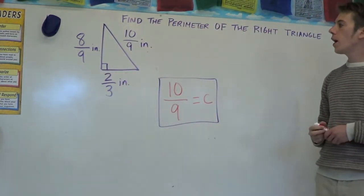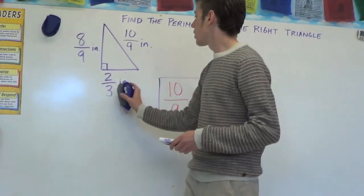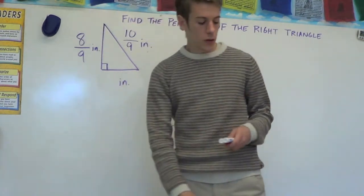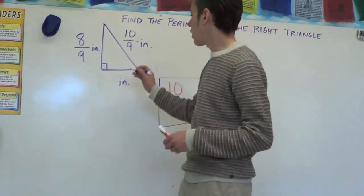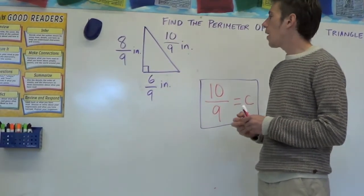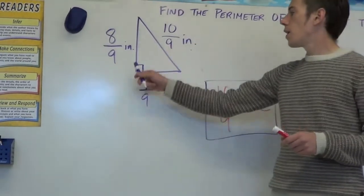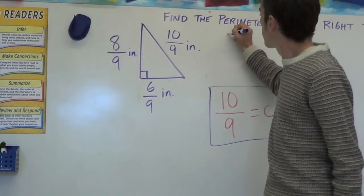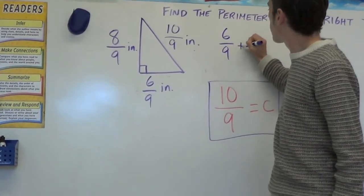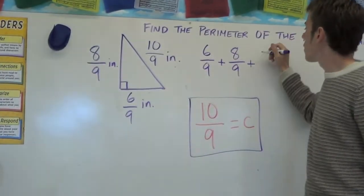Now before we add, we have to change this fraction so it has a 9 on the bottom. 2 thirds is equivalent to 6 over 9. We get that by multiplying the top and bottom by 3. And now we have three fractions that all have the same denominator so we can just add them up. 6 over 9 plus 8 over 9 plus 10 over 9.